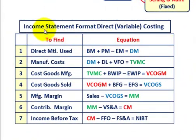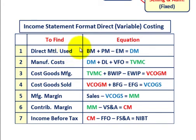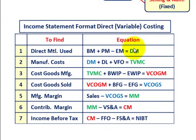Now let's look at how we lay out the income statement format for direct variable costing. It's a seven-step process. For step one, direct material used: take beginning materials (BM), add purchases of materials (PM) for the period, then subtract ending materials (EM). That gives us our direct materials used for the period.